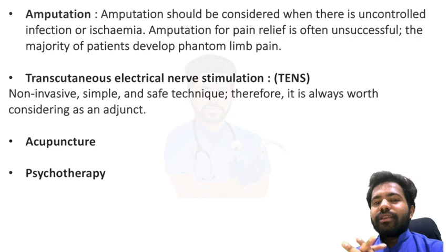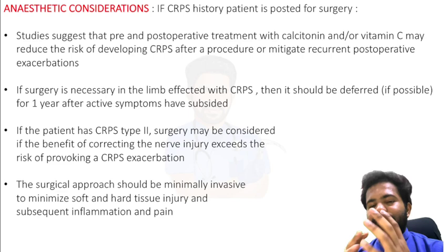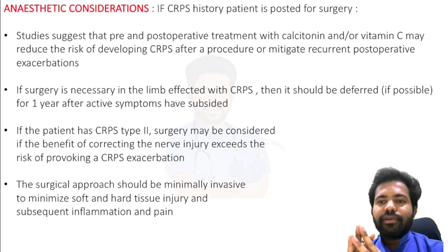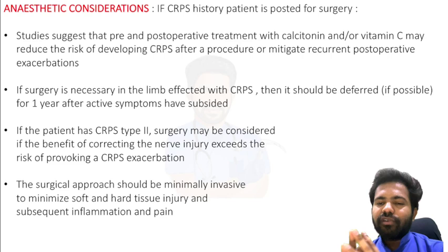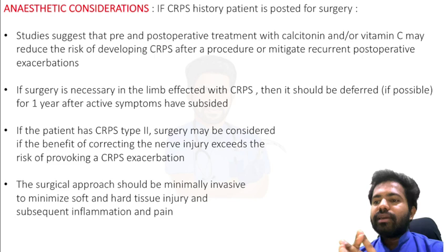Regarding anesthetic considerations for a patient with CRPS history posted for elective surgery: studies suggest that pre- and post-operative treatment with calcitonin or vitamin C may reduce the risk of developing CRPS after a procedure or mitigate recurrent post-operative exacerbations. If surgery is necessary in the CRPS-affected limb, it should be deferred if possible for one year after active symptoms have subsided.